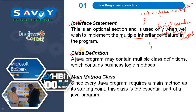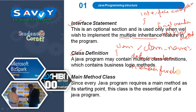The next one is class definition. A Java program may contain multiple class definitions which contain business logic methods. A class is a collection of data members and member functions. The last one is the main method class. Since every Java program requires a main method as its starting point, this class is the essential part of the Java program. With the help of the main method only, the program execution will start.